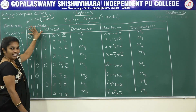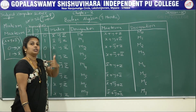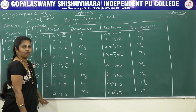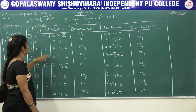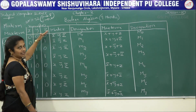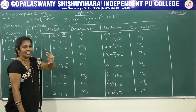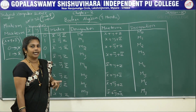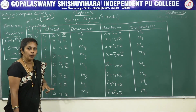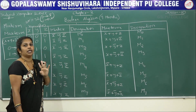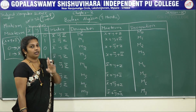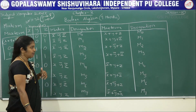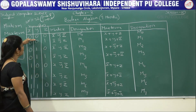Here I demonstrated for three variables x, y, z, giving eight different combinations. If you take two variables, you get four combinations. We will explain that in the next class as well.